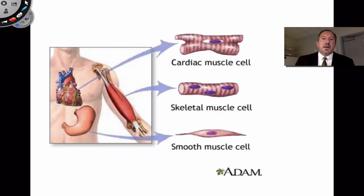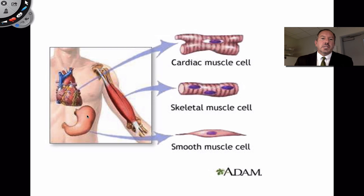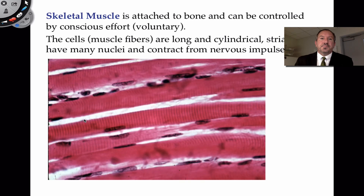So, we have cardiac muscle found in the heart, skeletal muscle found in muscles connected to the skeletal system, and smooth muscle cells found in arteries, veins, and the digestive system.